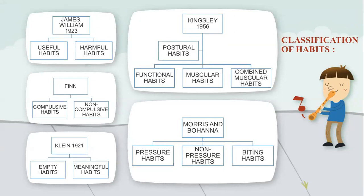Next, the Maurice and Mohana classification has divided habits into pressure habits, non-pressure habits, and biting habits. Pressure habits include lip sucking and thumb and digit sucking. Non-pressure habits include mouth breathing, whereas biting habits include nail biting and lip biting. So these are the important classifications of oral habits.